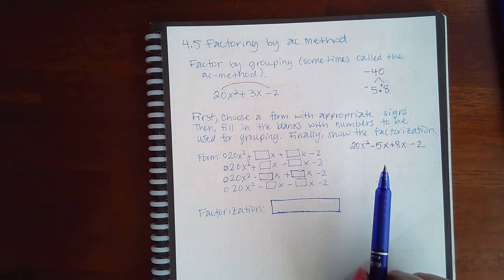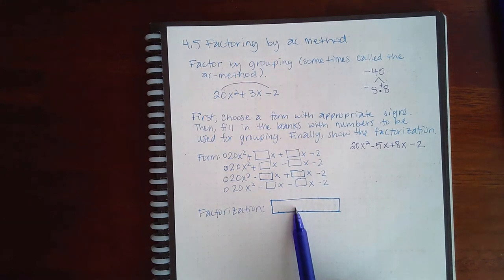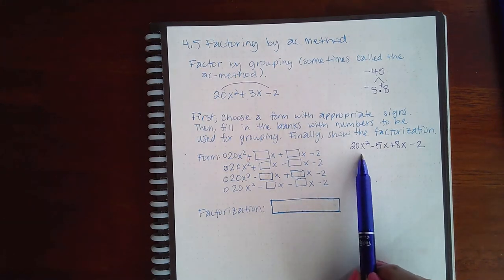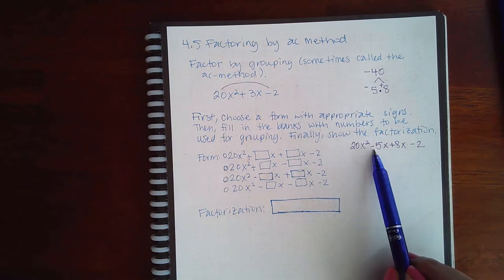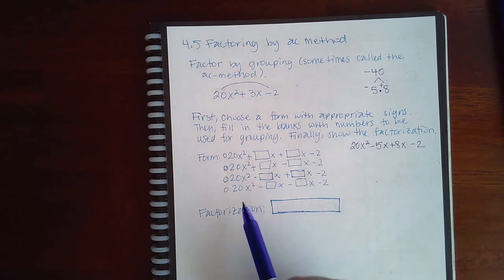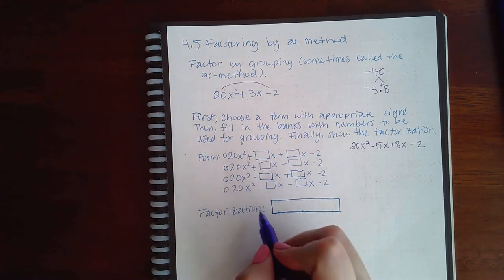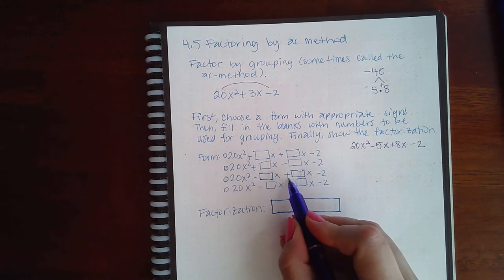The only thing different here in this problem is, instead of just giving you the final answer, they actually want to know how you split up that 3x. Since I have a negative first and then a positive, I'm going to select this one here that has a negative and then a positive.